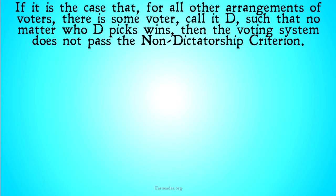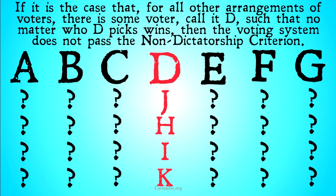So long as everyone can vote as they choose, the only voting procedure that won't have a dictator is a dictatorship. If for all arrangements of voters there is some voter D such that no matter what D picks, that wins, then the voting system does not pass the non-dictatorship criterion. We're not saying that for all arrangements there is a different person in each arrangement who picks the societal preferences. Rather, there's not one person such that whatever that one same person picks across all arrangements is the societal preference.